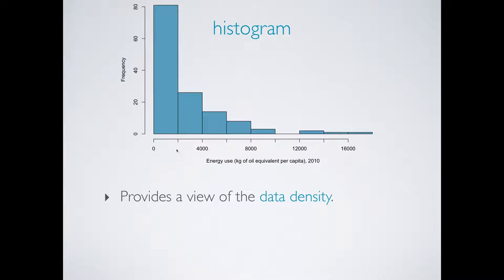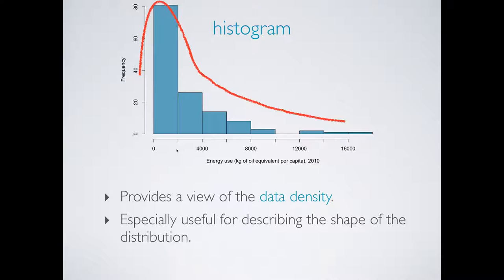That was a statement about the center of the distribution. Histograms are also especially useful for identifying shapes of distributions. In this case the distribution appears to be unimodal and right skewed. Let's focus on those two statements for a bit.